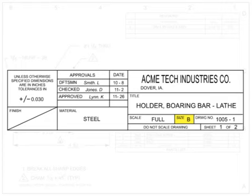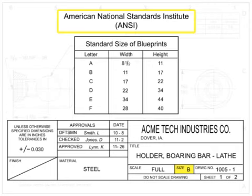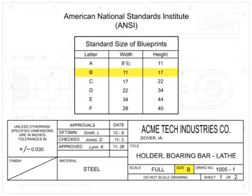The size of the drawing indicates what size paper the drawing should be printed on to be true to scale. There are many different types of drawing size standards, but the most commonly used in the United States is the American National Standards Institute, ANSI, which is also required by the ASME Y14 drawing standard. The farther in the alphabet the letter, the larger the drawing size.